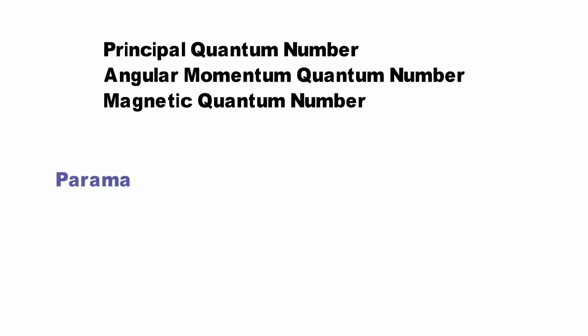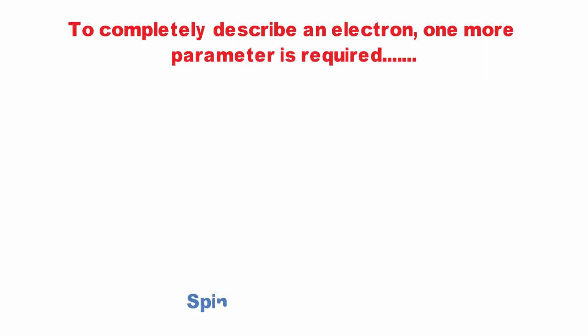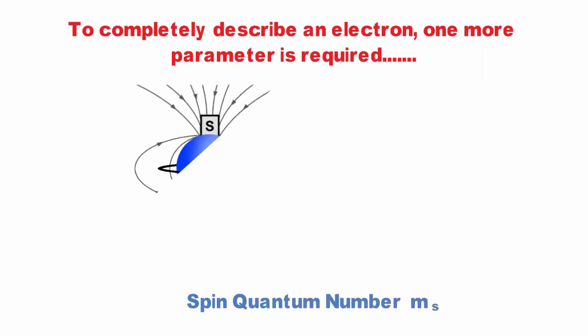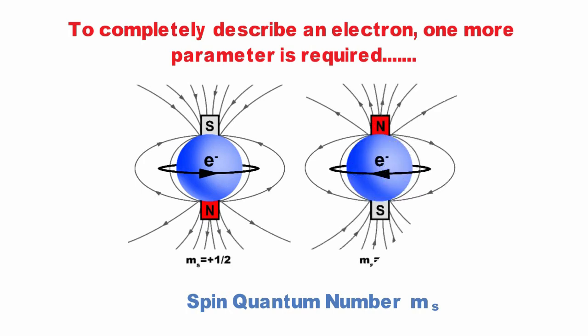These quantum numbers are the set of parameters required to completely describe an orbital. However, we need one more quantum number to completely describe an electron. The spin quantum number, m sub-S, relates to the spin of an electron. Spin is an intrinsic property of all electrons. It is quantized, and there are only two possible alignments of spin, spin up and spin down, designated as positive one-half and negative one-half.